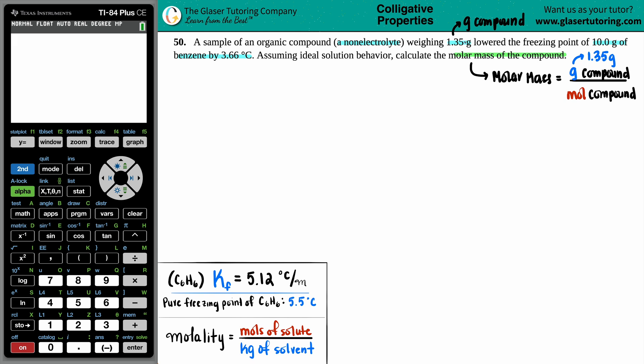I hope that we have the moles because then plug it in and solve. They said that this 1.35 gram compound, the organic compound, lowered the freezing point by 3.66 degrees Celsius. Didn't give me the moles, so I got to think of other formulas.